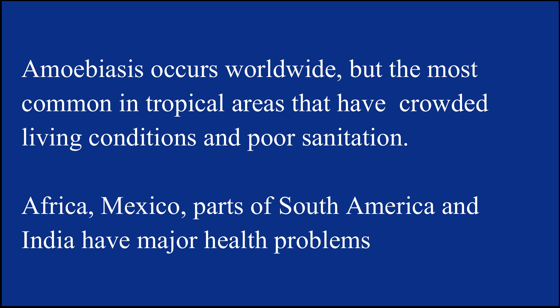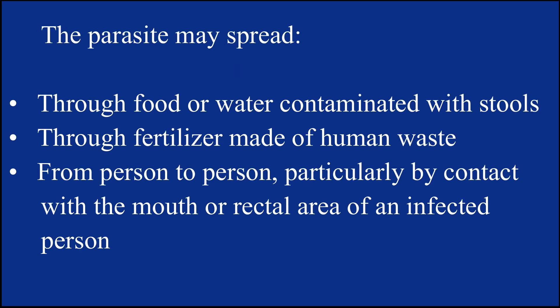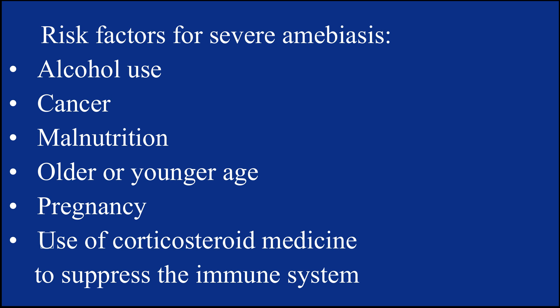Amoebiasis occurs worldwide but is most common in tropical areas with crowded living conditions and poor sanitation. Africa, Mexico, parts of South America, and India have major health problems because of this disease. The amoebic parasite may spread by three means: through food or water contaminated with stools, through fertilizers made of human waste, and from person to person by contact with the mouth or rectal area of an infected person.